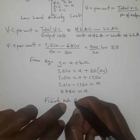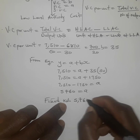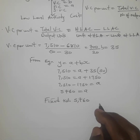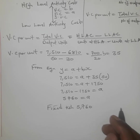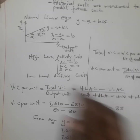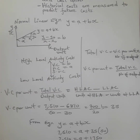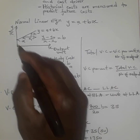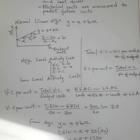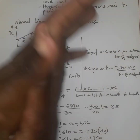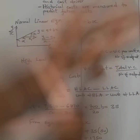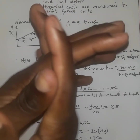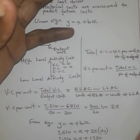So our fixed cost is 5,760 — the value which does not change at any given level of production. It is the y-intercept, so when you plot these values, this value is read at that particular point on the y-axis. Thank you very much. Please don't forget to subscribe, and in case of any question, kindly drop it in the comment section and I'll be able to respond.